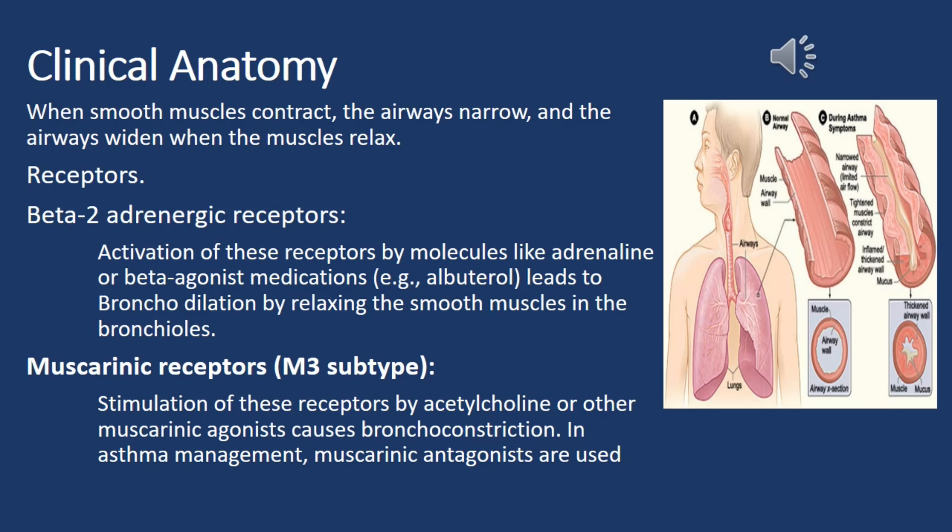Beta-2 adrenergic receptors: activation of these receptors by molecules like adrenaline or beta-agonist medications, for example albuterol, leads to bronchodilation by relaxing the smooth muscles in the bronchioles. Muscarinic receptors: stimulation of these receptors by acetylcholine or other muscarinic agonists causes bronchoconstriction.